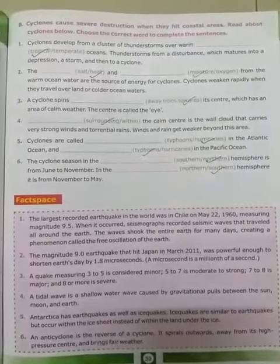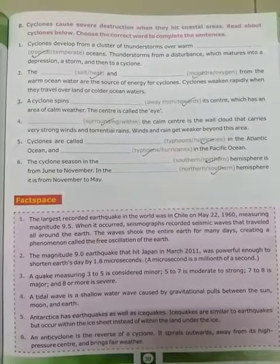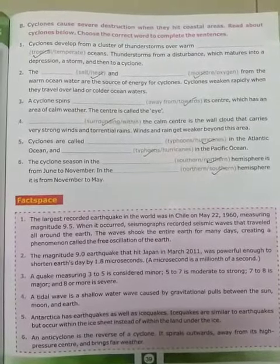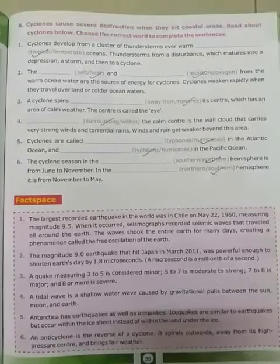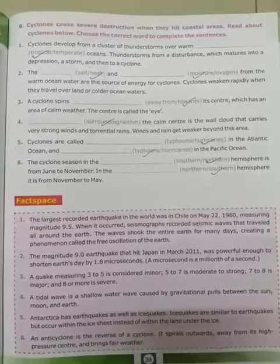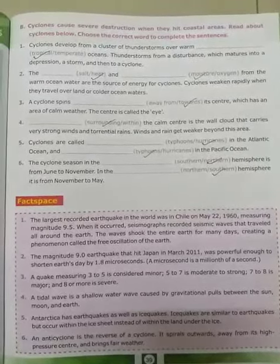Fourth, surrounding the calm center is the wall cloud that carries very strong winds and torrential rains. Winds and rain get weaker beyond this area.